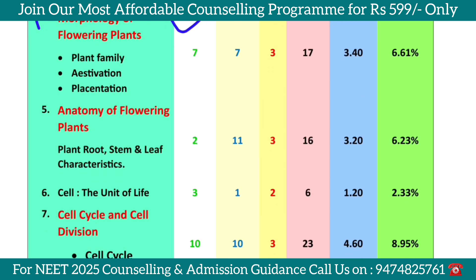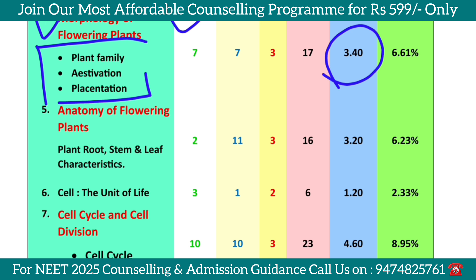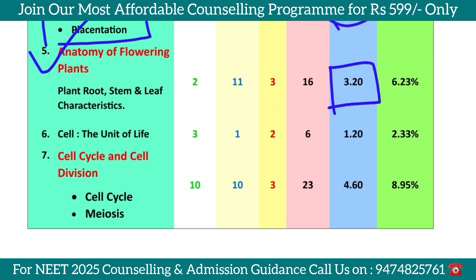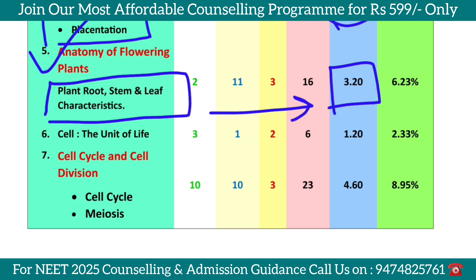The Morphology of Flowering Plants — this chapter has about 3 questions. These topics are basic questions. The Anatomy of Flowering Plants is another chapter with 3 questions, covering plant roots, stem and leaf characteristics. These are basic questions, but the whole chapter is line by line.